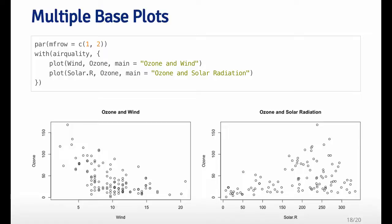And so in order to do that, I need to set the par MF row equals to one row and two columns, so I can make the two plots side by side. And then I just call plot twice. So every time I call plot, it creates a new plot. And so the first one will be in the left-hand side, and the second call of the plot will be in the right-hand side. And that's how I use MF row.